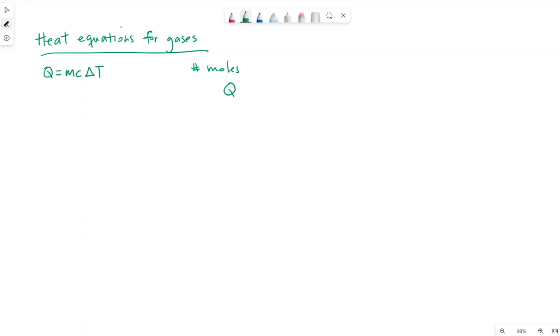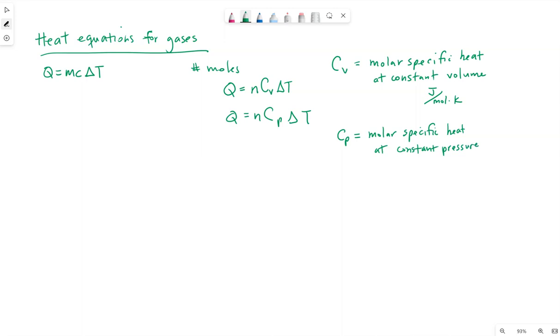So we can write heat in terms of number of moles, but it turns out we only have two main equations for heat. C sub V is called the molar specific heat at constant volume. It has units of joules per mole kelvin instead of joules per kilogram kelvin. C sub P is the molar specific heat at constant pressure. It also has the same units of joules per mole kelvin.